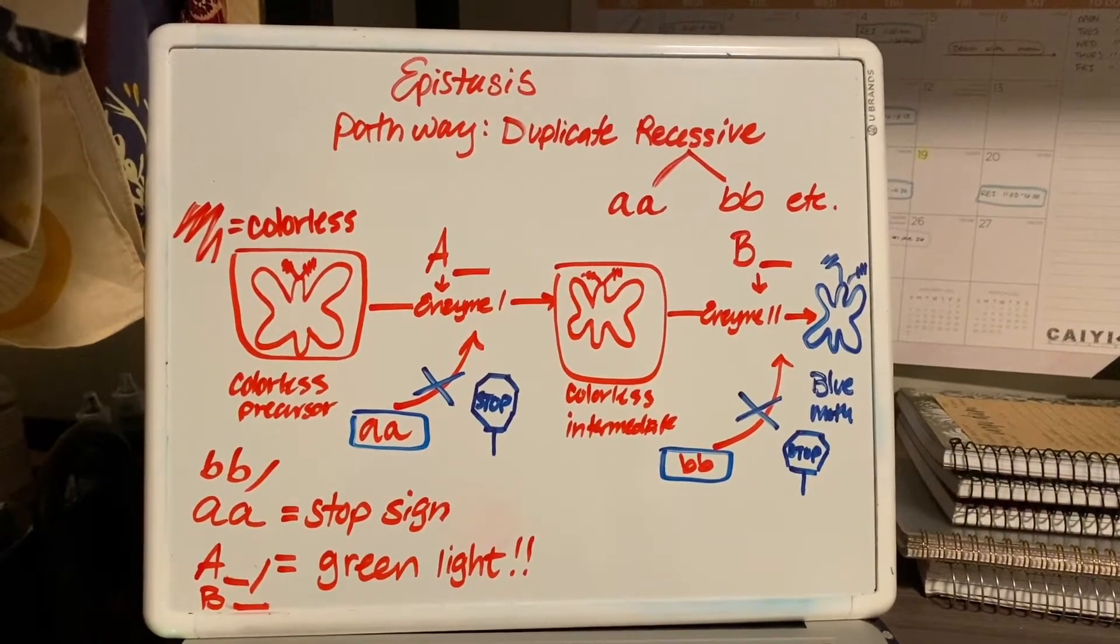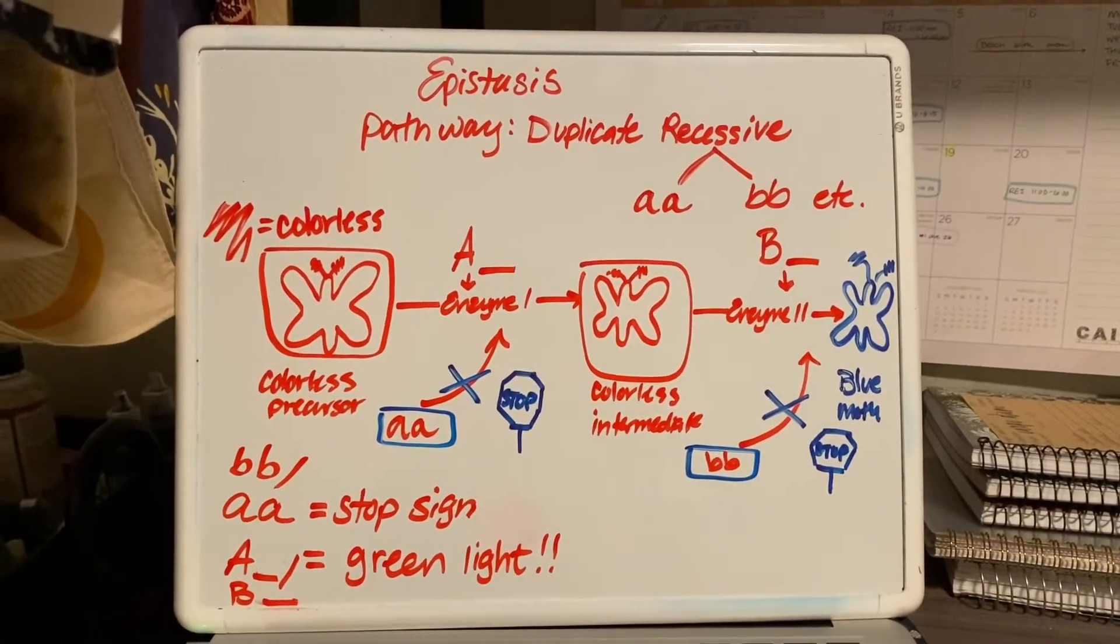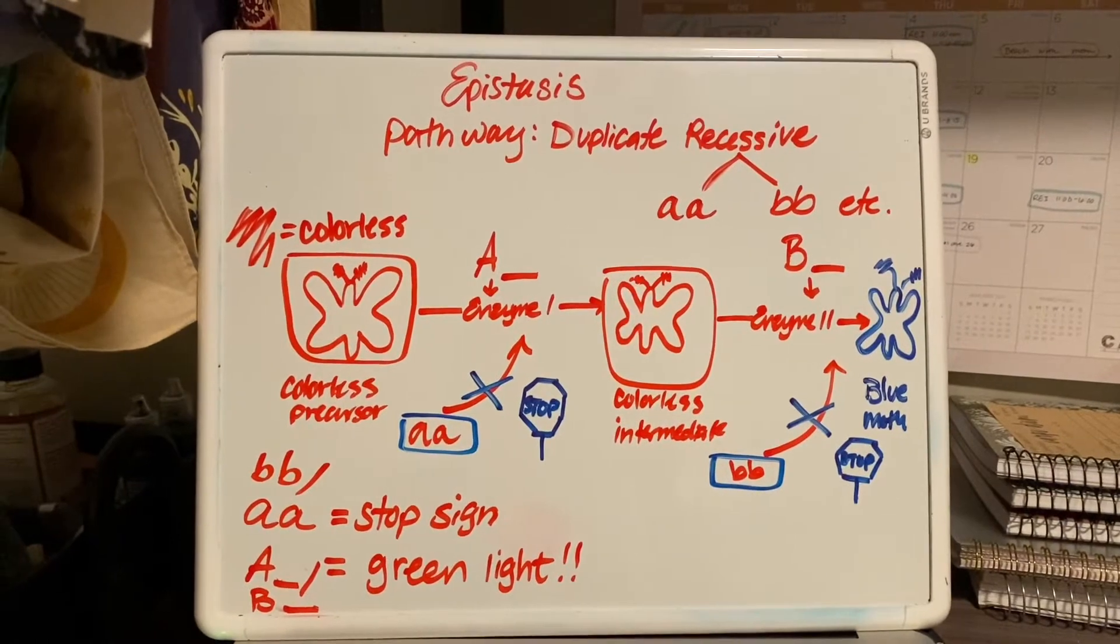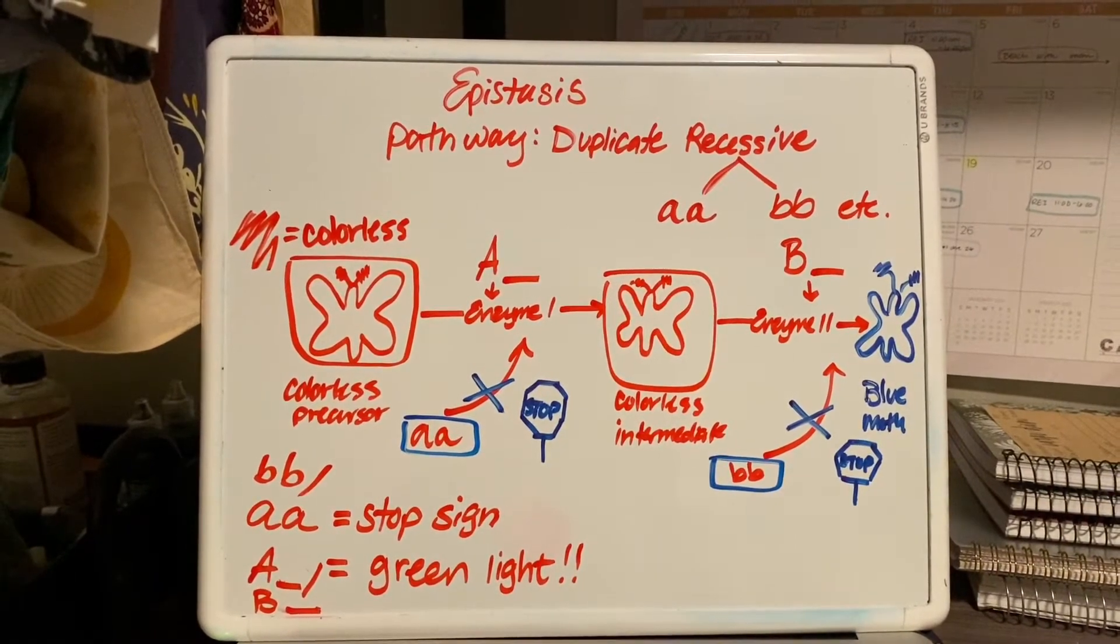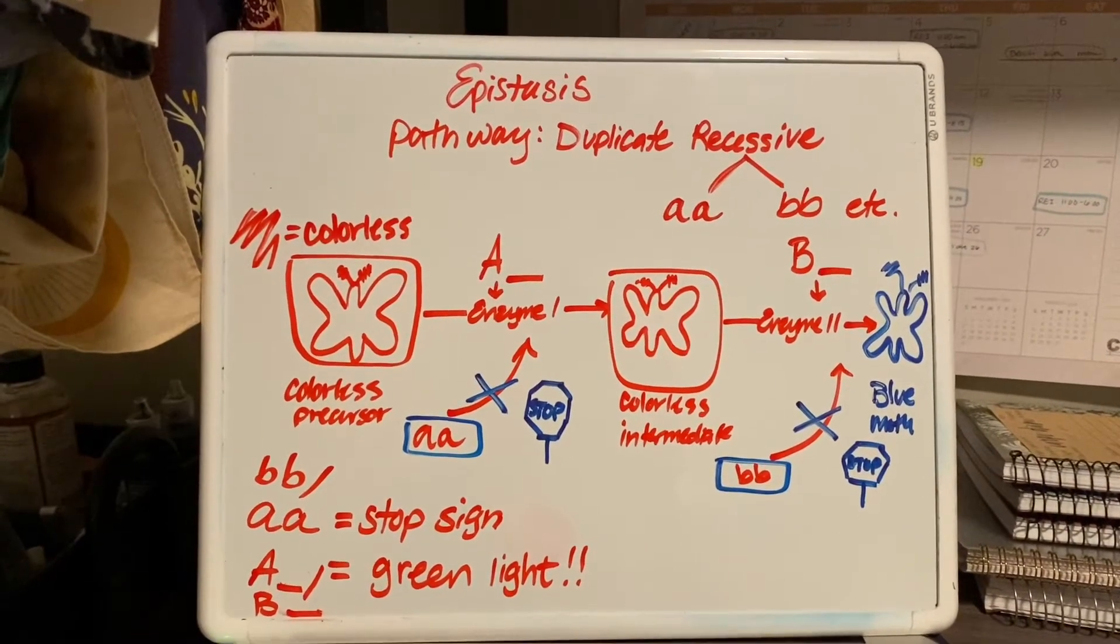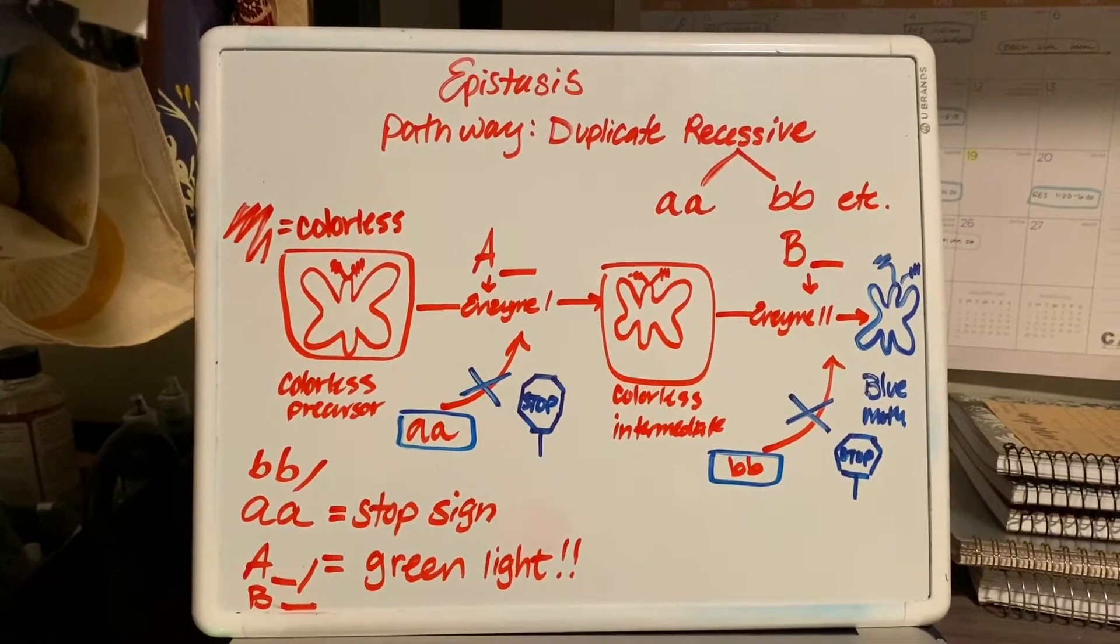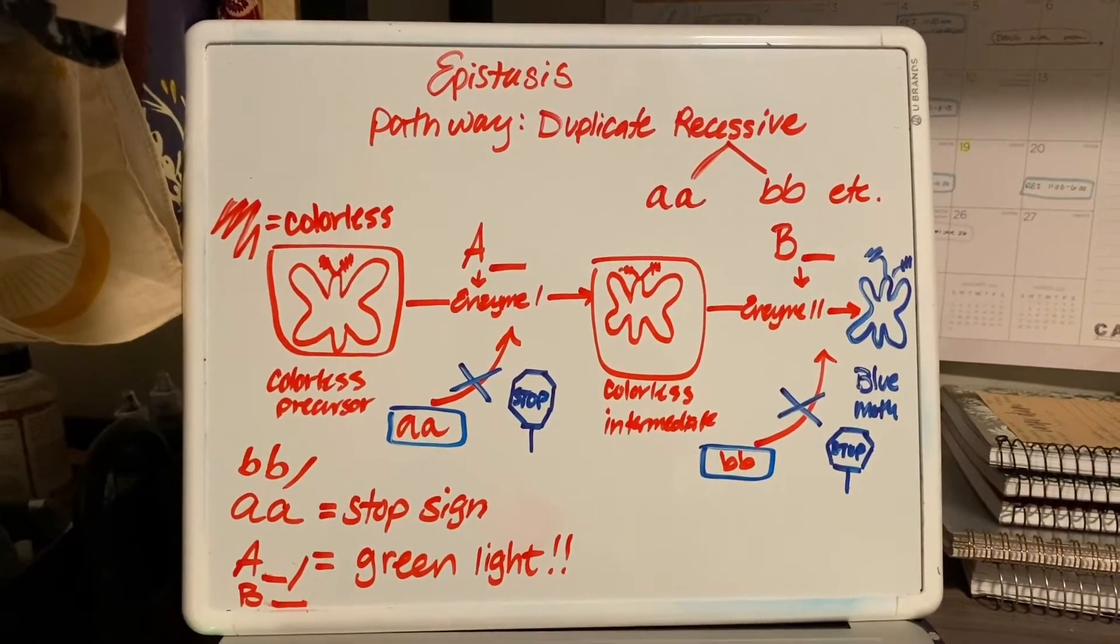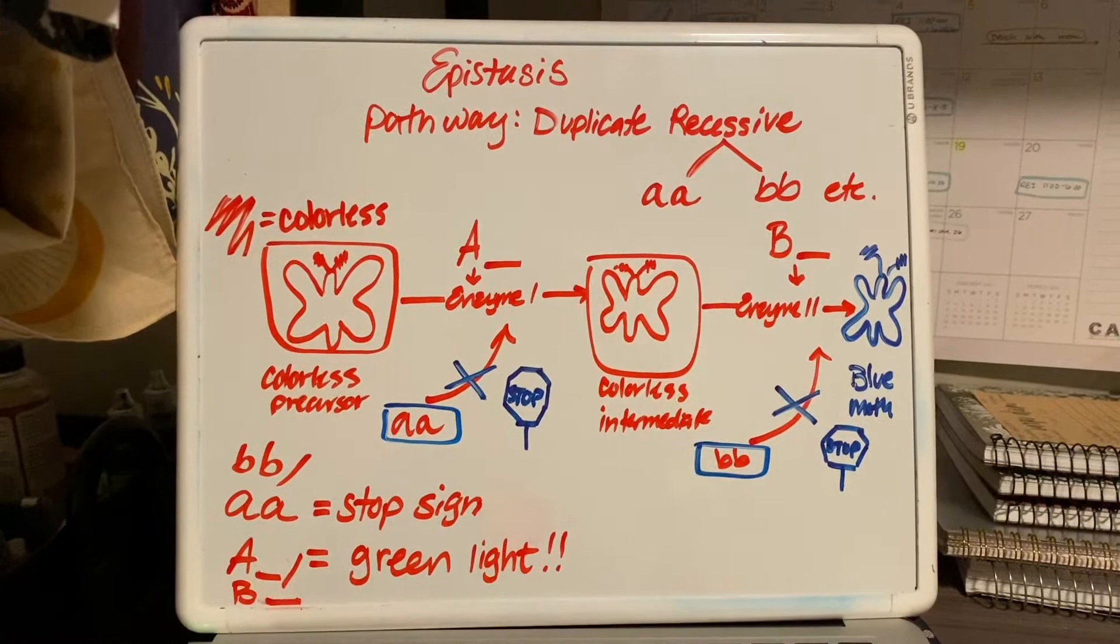For exam mini video 2, we're going to talk about epistasis and a specific pathway, the duplicate recessive pathway. Duplicate recessive just means that there are doubles of the recessive alleles.